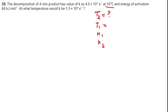So what is T1? 10 degree Celsius. You need to convert that into Kelvin by adding 273. So this becomes 373 Kelvin.